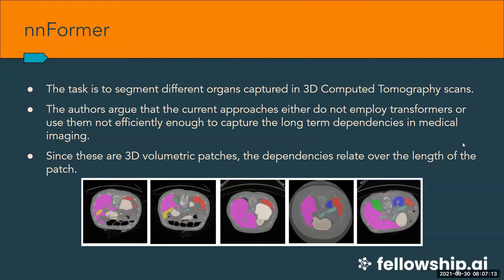Since these are 3D volumetric patches, dependencies exist over a dimension of a 3D patch. Though transformer-based segmentation approaches use transformers, they don't do so in an optimal manner. These approaches use transformers as assisting modules to encode global context into convolutional representations, treating convnets as main bodies on top of which transformers are applied to capture long-term dependencies. However, such design means the advantage of having a transformer is not fully exploited. Compared to convnets, transformers relax the inductive bias of locality, making them more capable of dealing with non-local interactions.